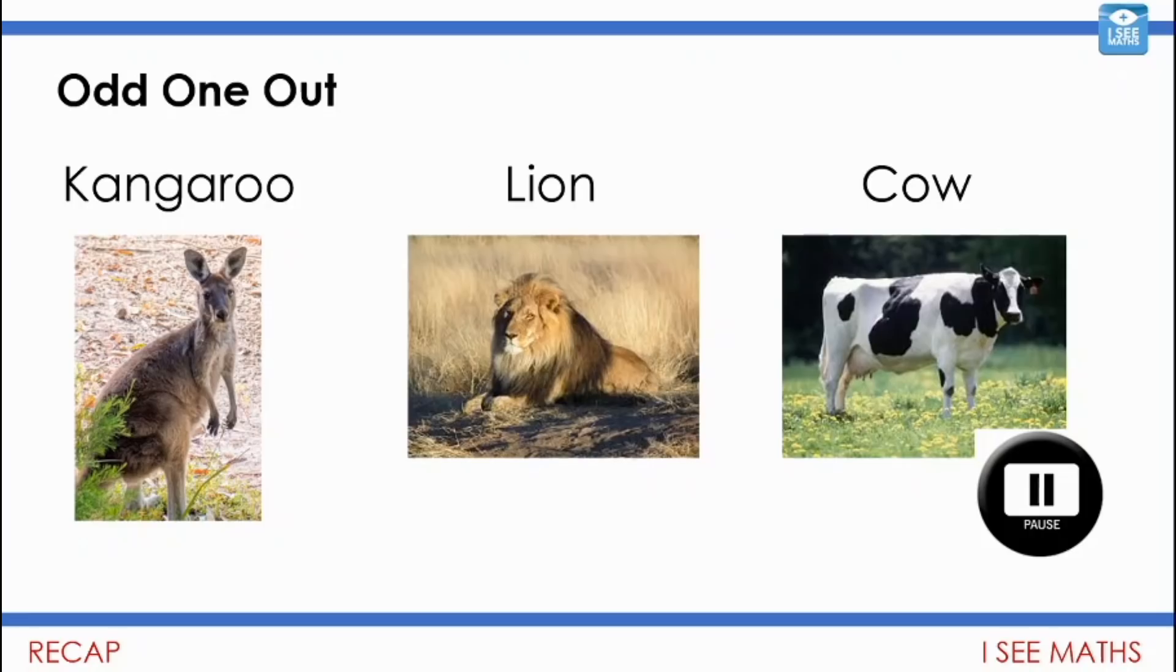Well, I wonder what you came up with. For me, I said the kangaroo is the odd one out because it stands up on two legs. No wait, the lion is the odd one out because it's the only meat eater. I actually had to find out about this. Kangaroos actually eat plants. No, the cow is the odd one out because it's the only one that lives on a farm. Different reasons it could be for each one.